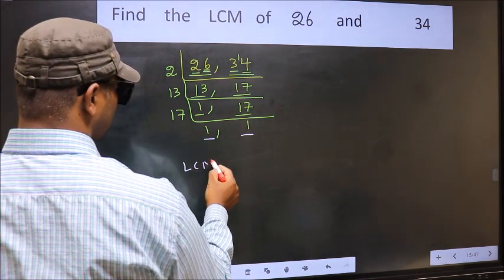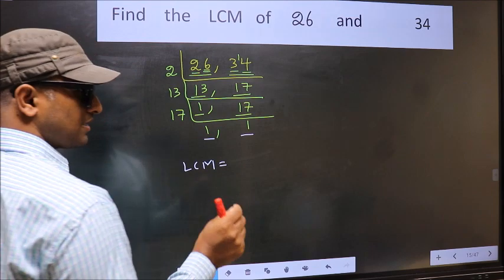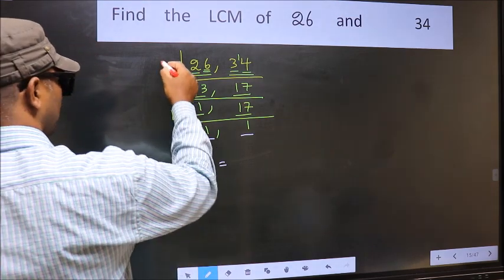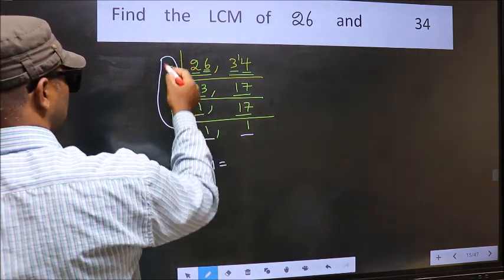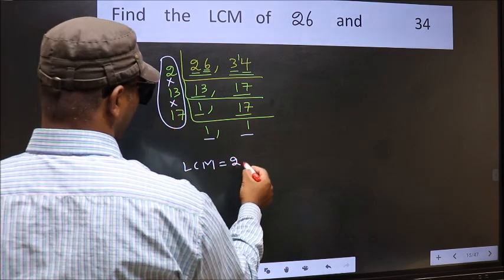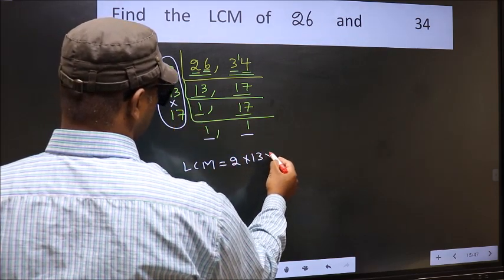So our LCM is the product of these numbers. That is 2 into 13 into 17.